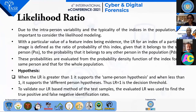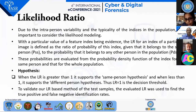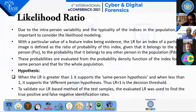The likelihood ratio for an index of a particular image is defined as the ratio of the probability of this index given that it belongs to the same person, to the probability that it belongs to another person in the population. The likelihood ratio works on two hypotheses: the same-person hypothesis and the different-person hypothesis. If the likelihood ratio value is greater than one, it supports the same-person hypothesis. If less than one, it supports the different-person hypothesis. If equal to one, it is the decision threshold.